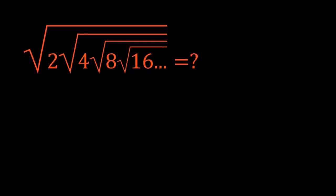First of all, I want you to notice that 2 is under 1 radical, 4 is under 2 radicals, 8 is under 3 radicals, 16 is under 4 radicals, so on and so forth. So whatever the power of 2 is, that's how many radicals that power is under. So we can basically write this as follows.